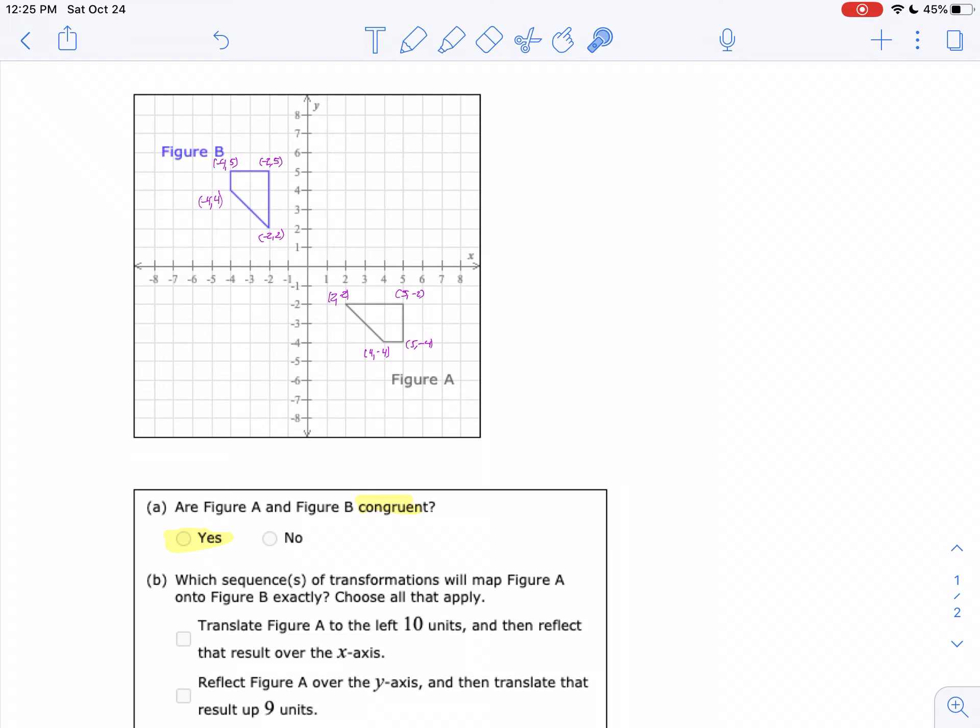If we take a look at the first one, if we translate it 10 units to the left and then reflect it over the x-axis, notice it will still be pointing to the left. When you reflect this, it's still pointing to the left and it needs to point down, so it's not going to be A.